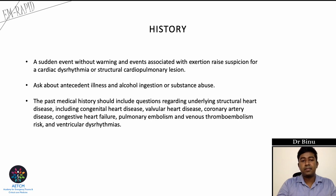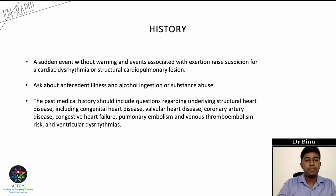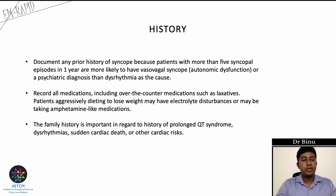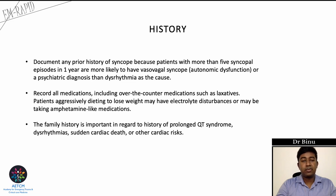Ask about any antecedent illness and history of alcohol or drug abuse. Past medical history should include questions about underlying cardiac conditions like congenital heart disease, valvular heart disease, coronary artery disease, congestive heart failure, pulmonary embolism, venous thromboembolism risk, and ventricular dysarrhythmias. Document any prior history of syncope, as patients with more than five episodes per year are more likely to have vasovagal syncope secondary to autonomic dysfunction or a psychiatric diagnosis rather than dysarrhythmia. Record all medications including over-the-counter drugs. Family history can give clues regarding prolonged QT syndrome, dysarrhythmias, and sudden cardiac death.